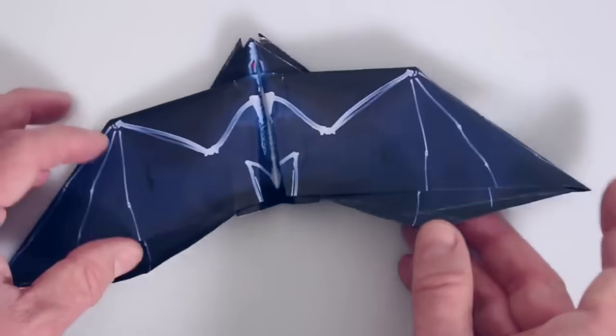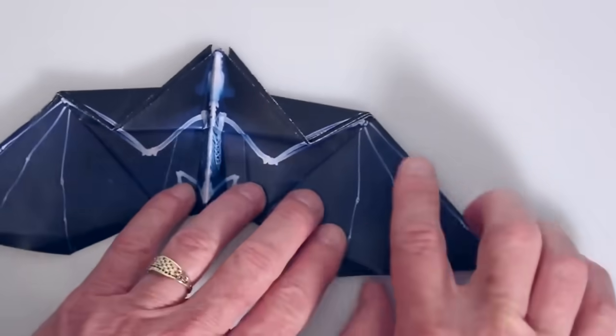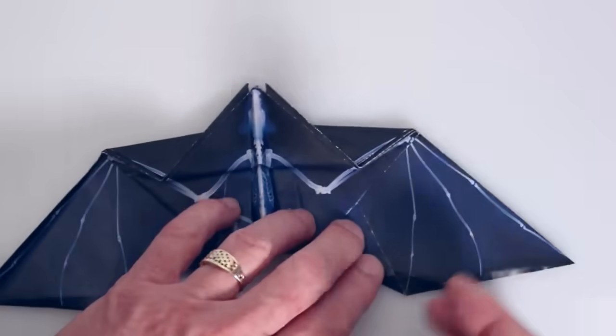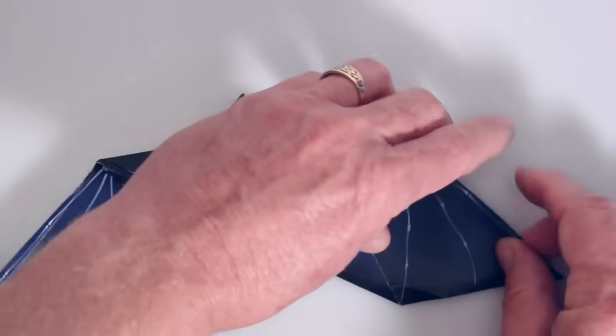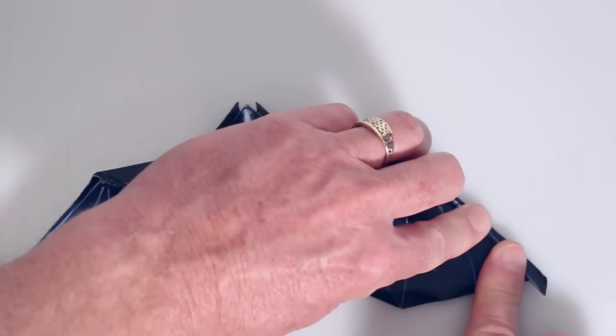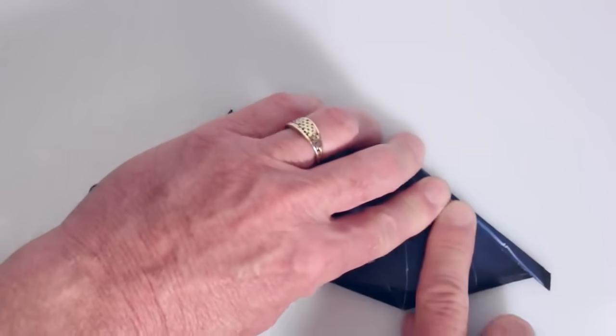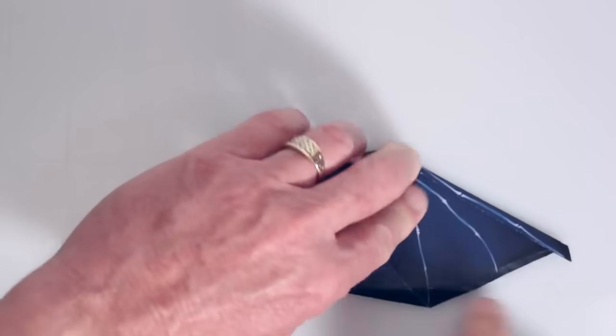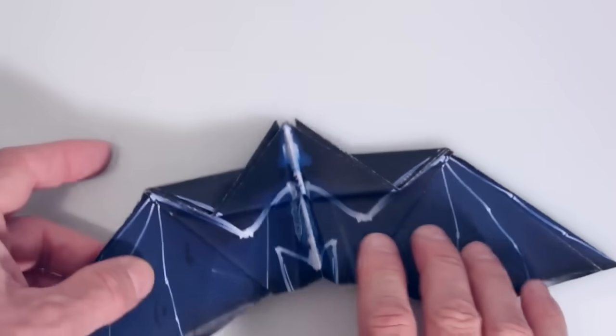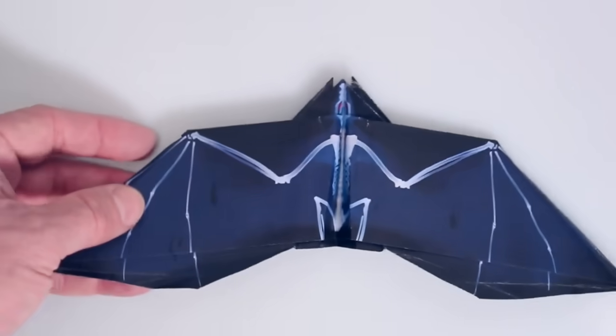We've just folded that over, flip it over again. Well, actually that was the right side. We flip it over and then we'll be doing the left side, which is because it's upside down, the right hand side of the screen. There we go. Okay. Just about all of the folding is done here.